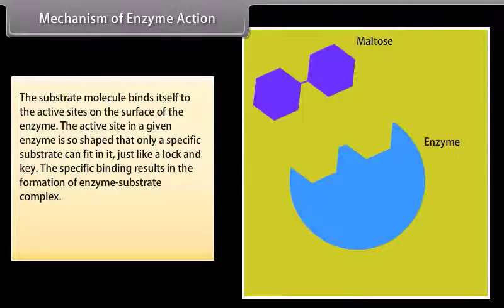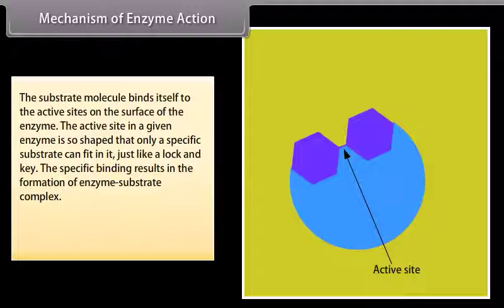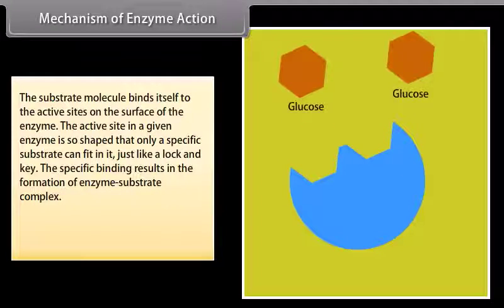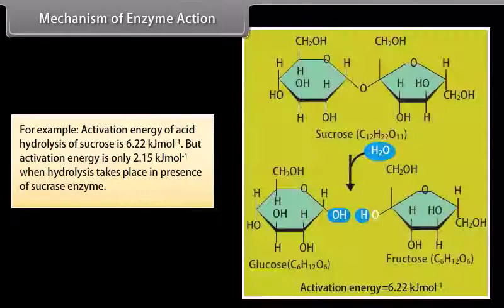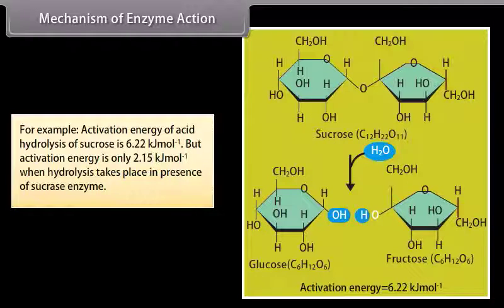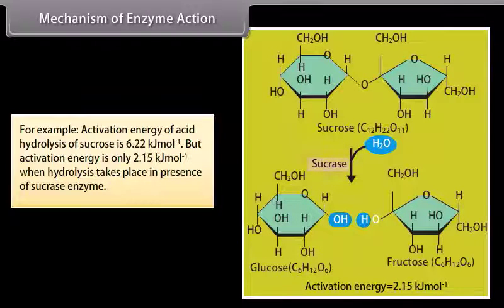Mechanism of enzyme action: the substrate molecule binds itself to the active sites on the surface of the enzyme. The active site in a given enzyme is so shaped that only a specific substrate can fit in it, just like a lock and key. The specific binding results in the formation of an enzyme-substrate complex. Enzymes lower the activation energy of the reaction. For example, the activation energy of acid hydrolysis of sucrose is 6.22 kilojoules per mole, but the activation energy is only 2.15 kilojoules per mole when hydrolysis takes place in the presence of the sucrase enzyme.